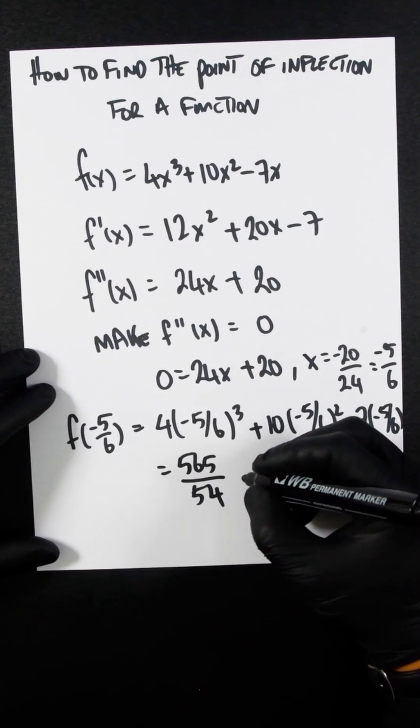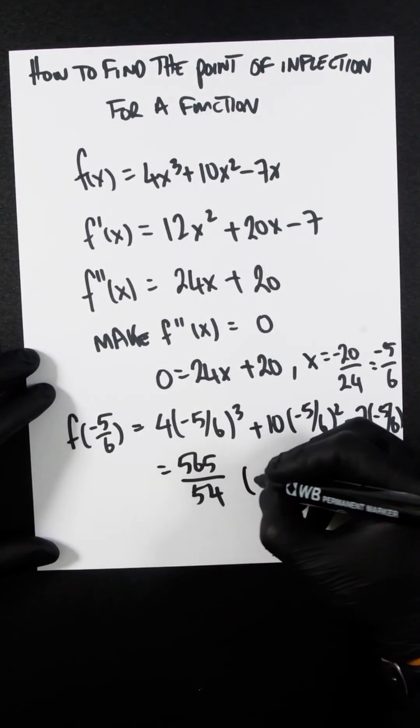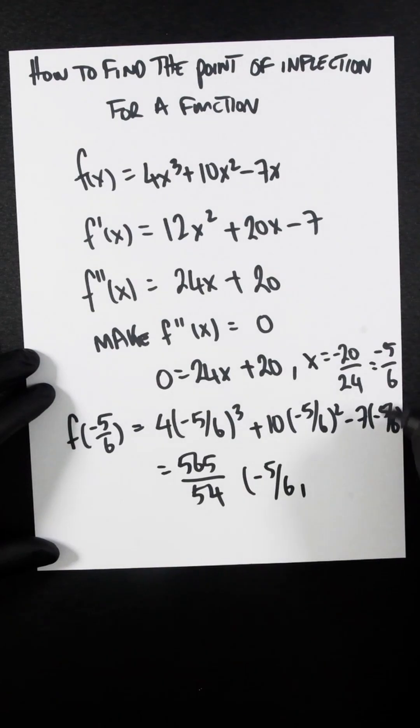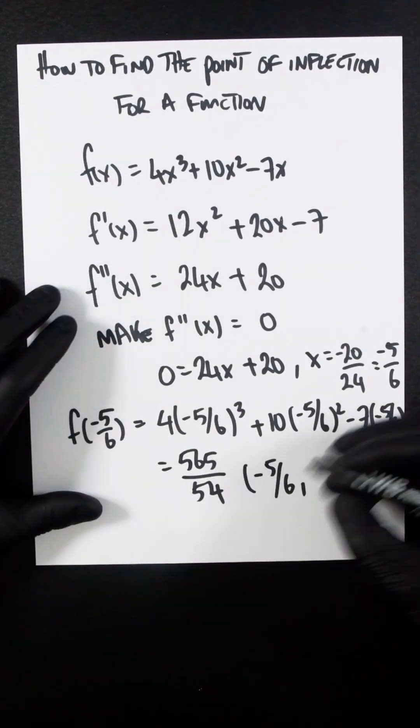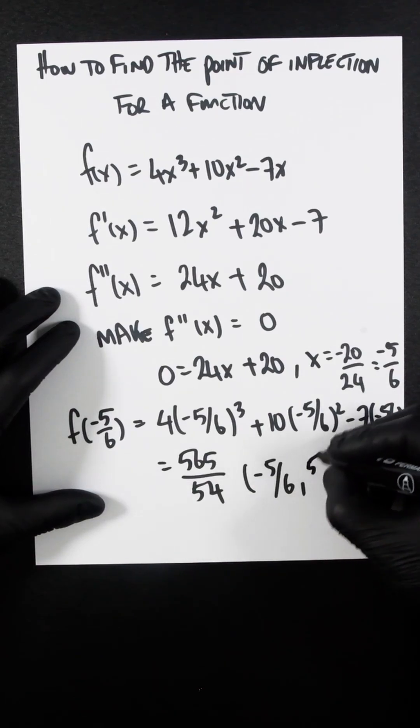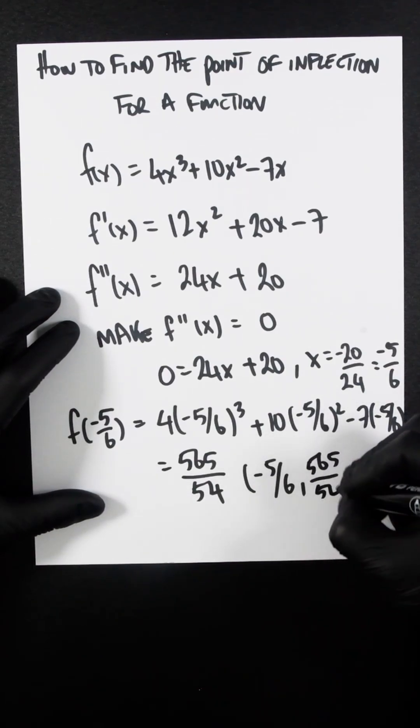So that means the point of inflection is (-5/6, 565/54). That's the x term - we found that. We plugged it in to here, and we've now found the y term, which is 565/54.